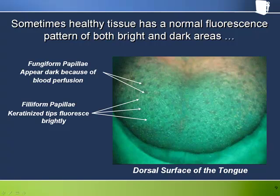Here we are seeing examples of some of the underlying concepts explained in the science module. Blood is a strong absorber and causes the perceived fluorescence to decrease, and keratin fluoresces, which causes the perceived fluorescence to increase.